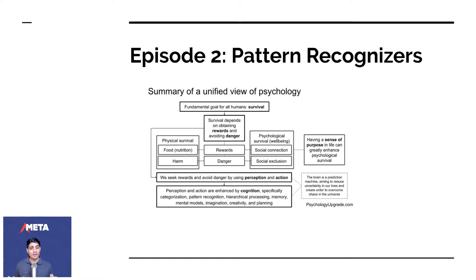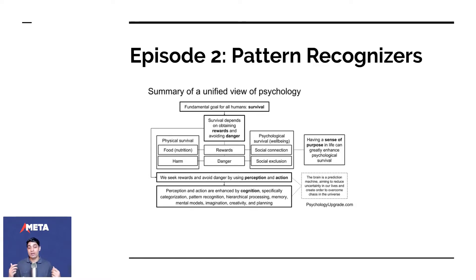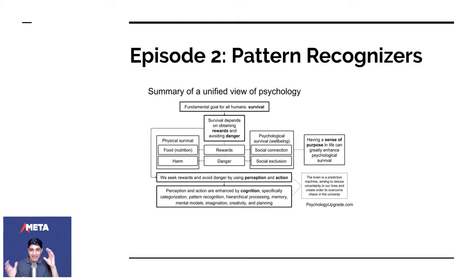We seek rewards and avoid danger by using perception and action. Perception is trying to figure out what the consequences of our actions will be — we perceive and understand things, and action is the moment you understand something and act upon it. Perception and action are enhanced by cognition: categorization, pattern recognition, hierarchical processing, memory, creating a mental model, imagination, creativity, and planning.